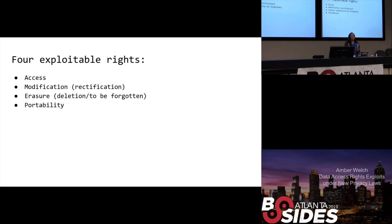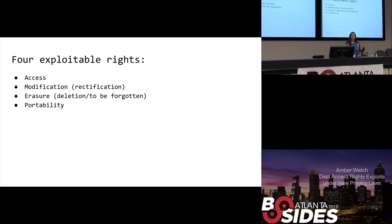There are four primary exploitable rights. The first is the access right — this is the major issue for exploit concepts. The right to access is simply the right to tell a company, 'Hey, I know you have data on me. I want to know what you have. Give me a full record of everything you've got.' You can also request modification — you can tell a company the data you have on me is incorrect and I'm going to tell you to change it. This is also known as the right to rectification, and it's a good way to get a foot in the door with some of the exploits without asking for the full data set.